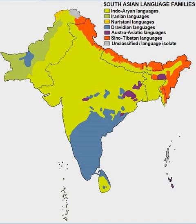The Nannul remains the standard normative grammar for modern literary Tamil, which therefore continues to be based on Middle Tamil of the 13th century rather than on modern Tamil. Colloquial spoken Tamil shows a number of changes: the negative conjugation of verbs has fallen out of use, and negation is instead expressed either morphologically or syntactically.